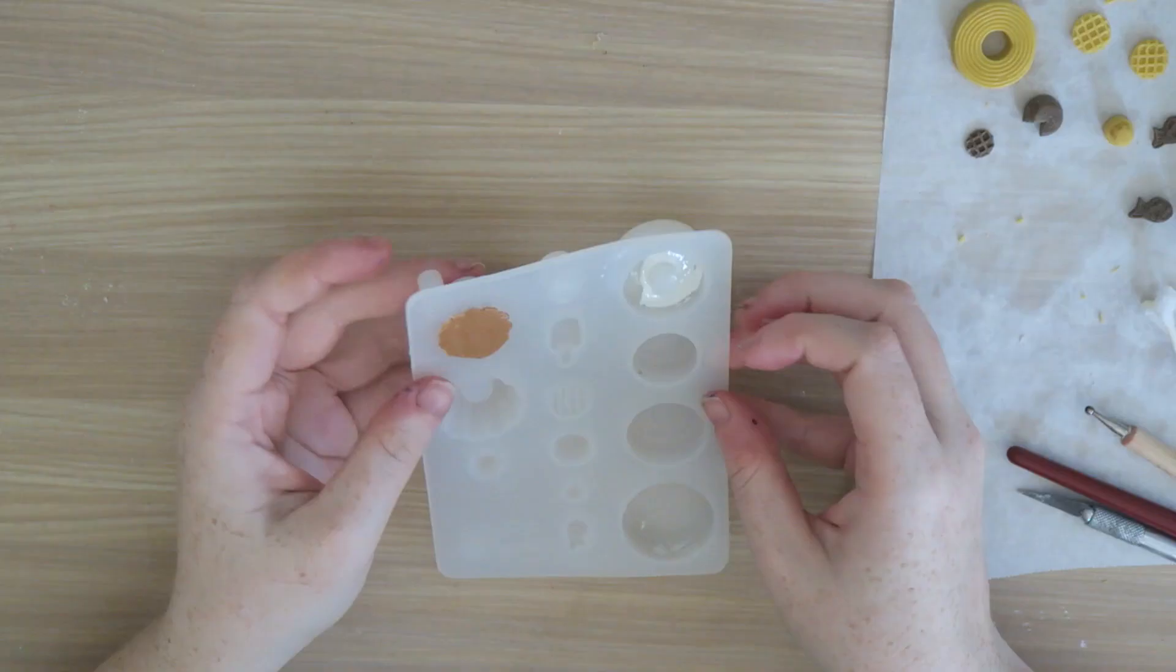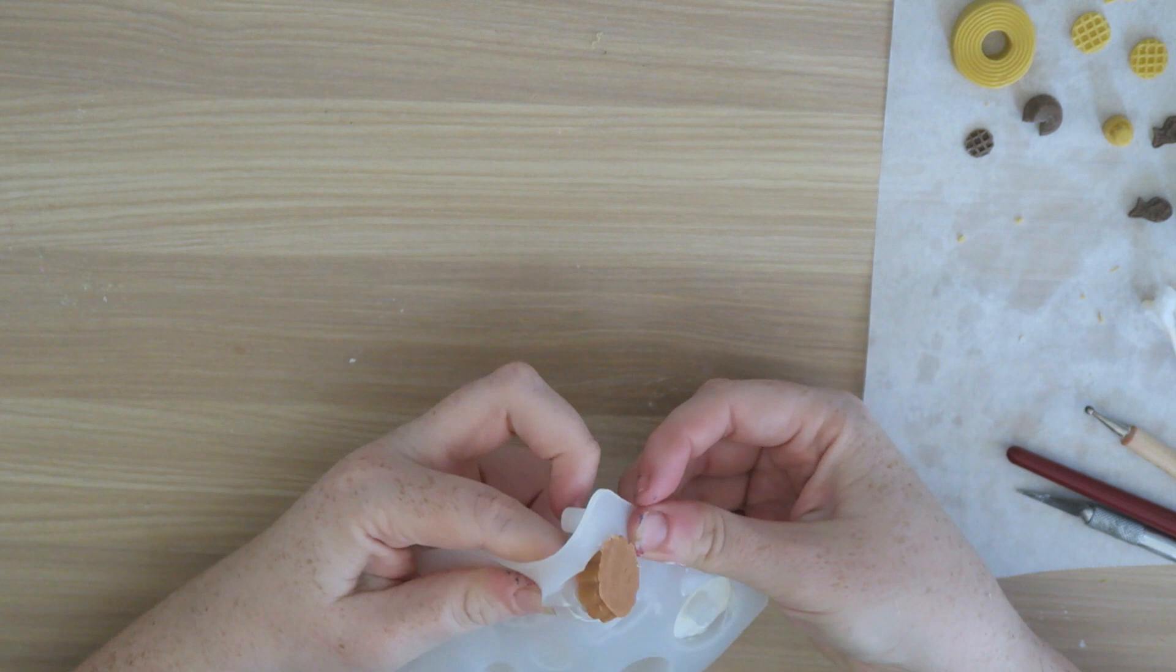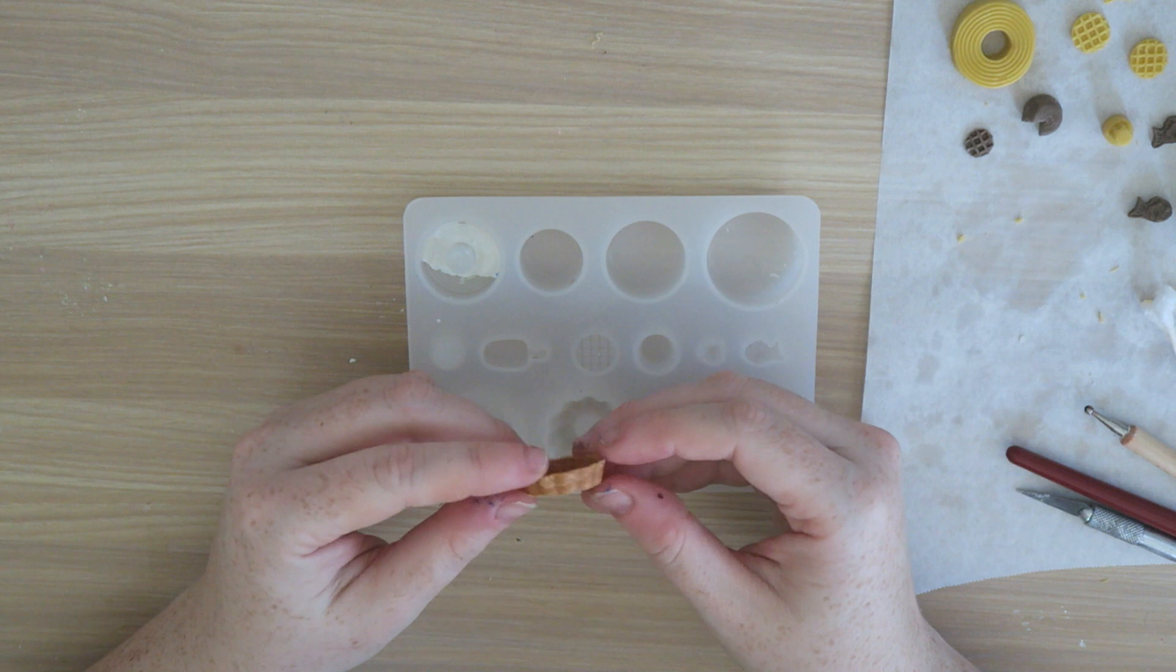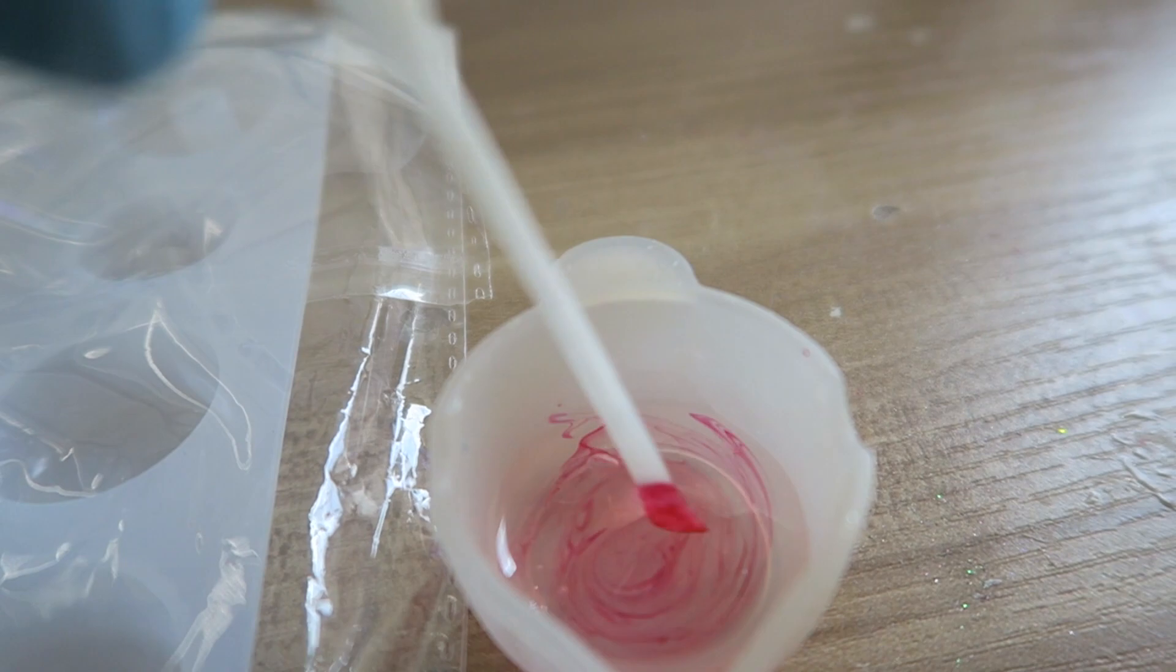So the one design that is a bit tricky to pop out using clay is the pie crust design and for this one if you're using clay I recommend just leaving it in for a few days until it's completely hardened and then taking it out. Otherwise you can also use UV resin. You can also use UV resin for all the other cavities as well.